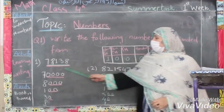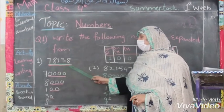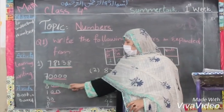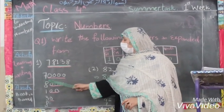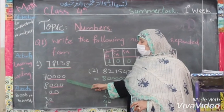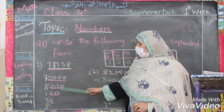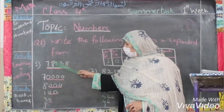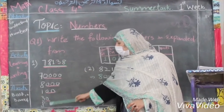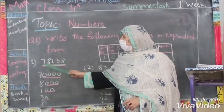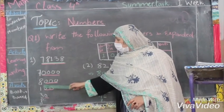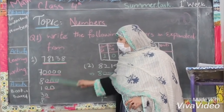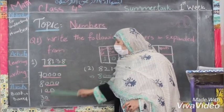So we have seventy-eight thousand one hundred and thirty-eight. In expanded form we will write it as: seventy thousand, eight thousand, one hundred, then thirty, and then eight. So: seventy thousand, eight thousand, one hundred, thirty, and eight.